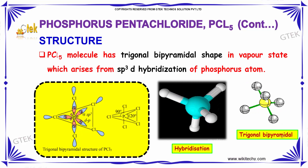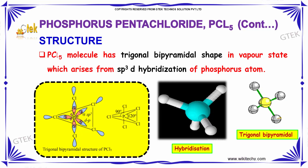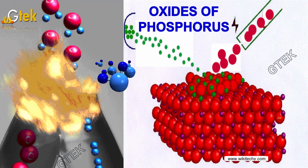The structure of phosphorus pentachloride: the PCl₅ molecule has a trigonal bipyramidal shape in the vapor state, which arises from sp³d hybridization of the phosphorus atom.